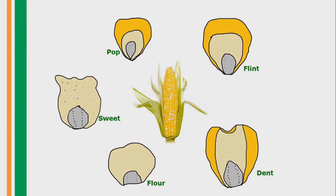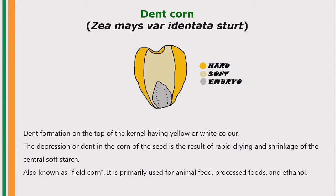First, dent corn — Zea mays var. indentata. It consists of a hard outer layer, a soft central part, and an embryo. The dent formation on the top of the kernel gives it a yellow or white color. The depression or dent in the corn is due to the rapid drying and shrinkage of this central soft starch. It also looks distinctive in structure.